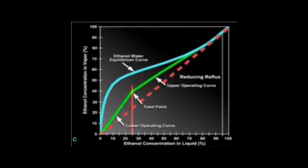What happens if we increase the reflux? The extreme is called total reflux — in other words, all of the distillate is returned to the column. This will cause the operating lines to move away from the equilibrium line, as shown in Figure 6, resulting in the minimum number of stages. Unfortunately, since there is no distillate stream, there is no product stream. Total reflux does not represent a practical operating point, but increasing reflux does reduce the number of stages.